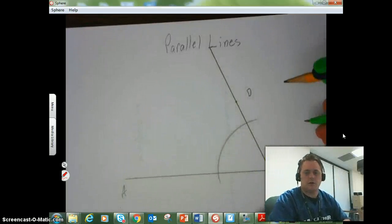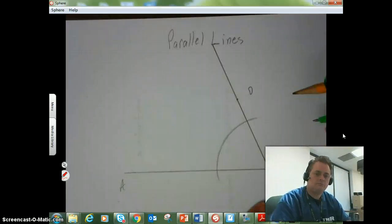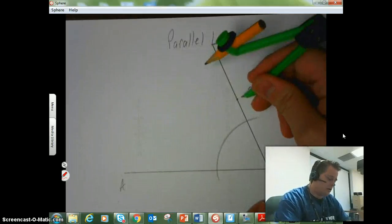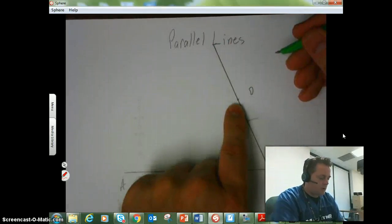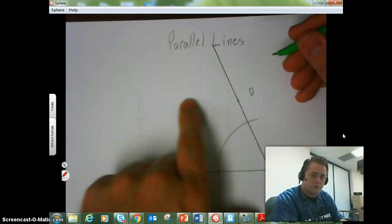That looks like it's dark enough for everybody to see it. So next thing I'm going to do, just like if I was copying an angle, is I'm going to copy that arc. Now keep in mind, what we're trying to do is we're going to go through this point.